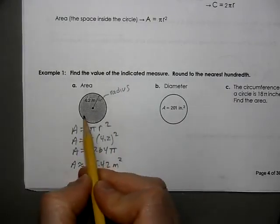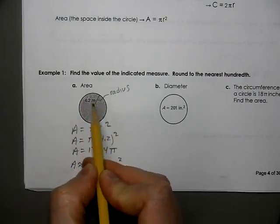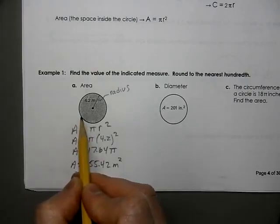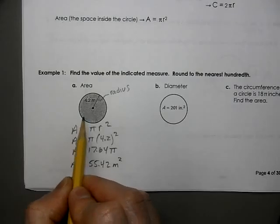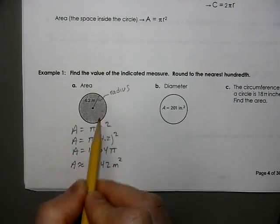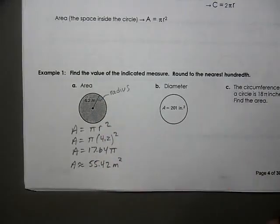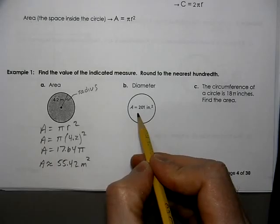These units are meters, so we would say meters squared. Because in area, we're talking about squares that are making up the circle. There would be 55 squares that made up this circle. Each of those squares would be 1 meter long by 1 meter long. Assuming that this represented 4.2 meters.